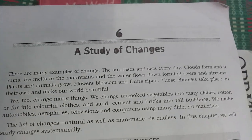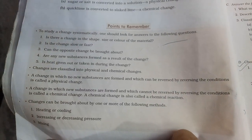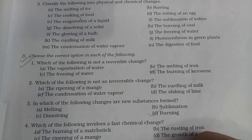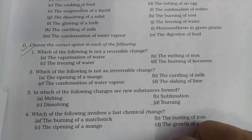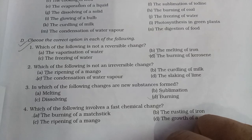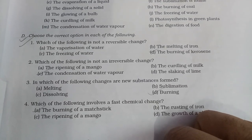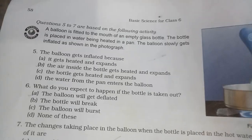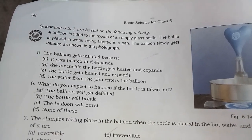Chapter 6: Study of Changes. Which of the following is not a reversible change? The burning of kerosene. Which of the following is not an irreversible change? The condensation of water vapour. Which change involves formation of a new substance? Burning. Which of the following involves a fast chemical change? The burning of matchsticks.